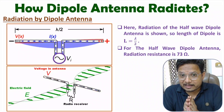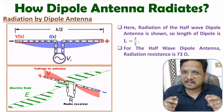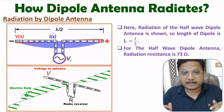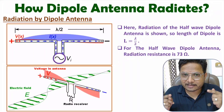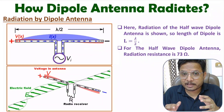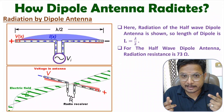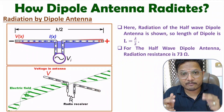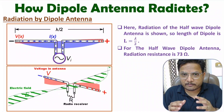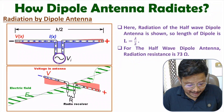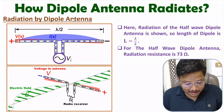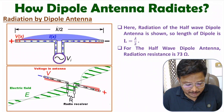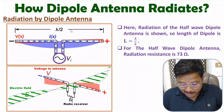Hello friends, welcome to Engineering Funda. In this video I'll explain how a dipole antenna radiates EM waves in space. First I'll explain how radiation happens by a dipole antenna, and after that I'll explain the reason behind that radiation. I'll be considering a half-wave dipole, meaning the length of the dipole is lambda by 2.